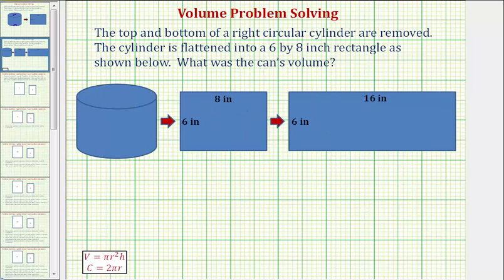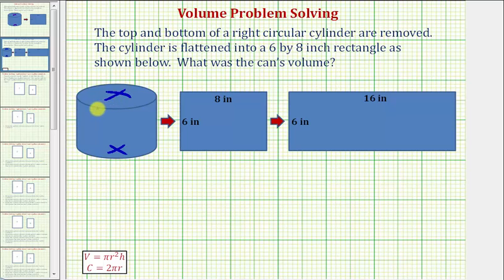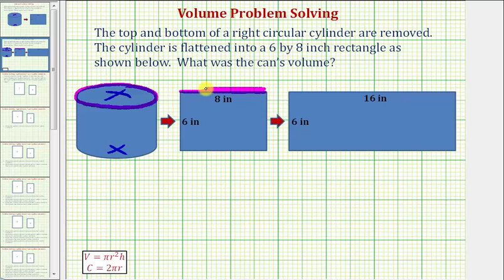Starting with the right circular cylinder, we remove the top and the bottom, then we flatten the cylinder and it forms this six inch by eight inch rectangle. The reason we have two layers is that if we were to flatten this right circular cylinder, the distance around this circle — the circumference of the circle — would be the same as the length along the first layer plus the same length along the back layer.